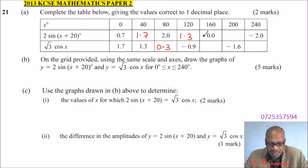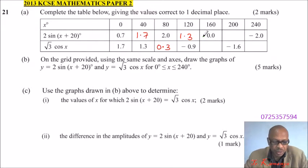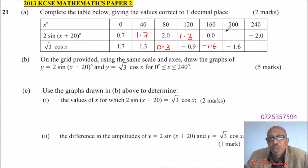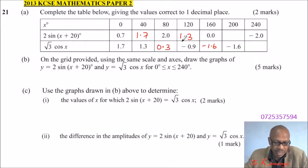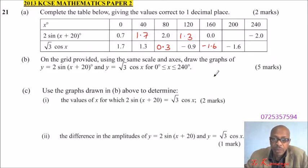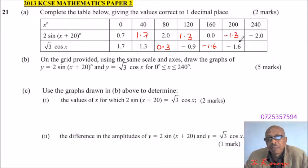Next, compute √3 cos 160, which gives minus 1.6 to one decimal place. For x = 200, compute 2 sin(200 + 20) = 2 sin 220, giving minus 1.3 to one decimal place.